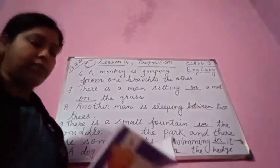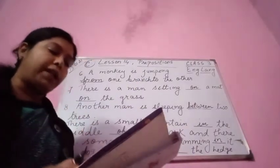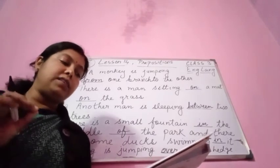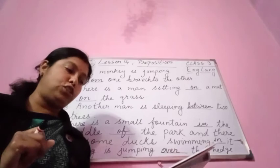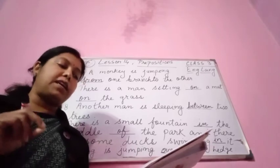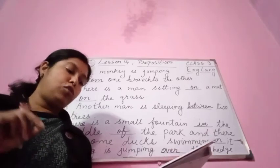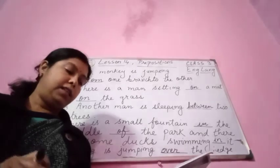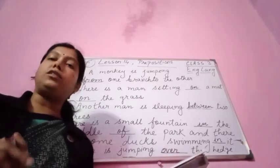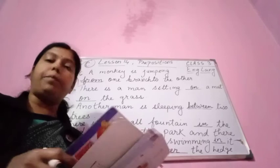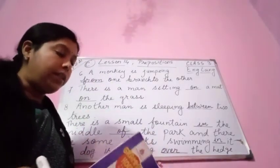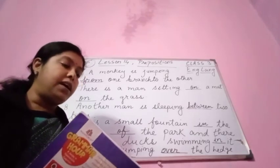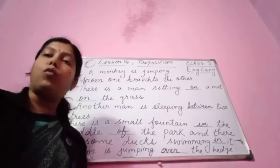We shall revise from number 1 to 10 once again. An old man is sitting on the bench reading a newspaper. The bench is near the gate of the park. There is a cat sleeping under the bench. A girl is taking her dog for a walk. Two boys are playing with a ball. A monkey is jumping from one branch to the other. There is a man sitting on a mat on the grass. Another man is sleeping between two trees. There is a small fountain in the middle of the park and there are some ducks swimming in it. A dog is jumping over the hedge.